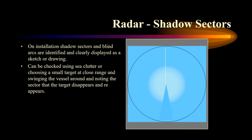The shadow sector can be checked using sea clutter or using a small target at close range and swinging the vessel around, noting the sector where the target disappears and reappears. On installation, shadow sectors and blind arcs are identified and clearly displayed as a sketch or drawing.